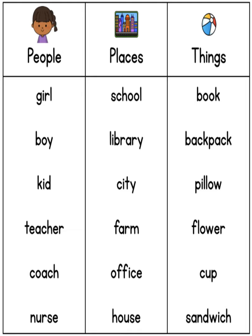People: Girl, Boy, Kid, Teacher, Coach, Nurse — यह सब people हैं। Places: School, Library, City, Farm, Office, House — Noun में यह सब places आते हैं। Things: Book, Backpack, Pillow, Flower, Cup, Sandwich — यह सब नाम हैं: लोगों के, जगहों के, चीज़ों के। किसी भी चीज़ के नाम को हम बोलते हैं Noun।